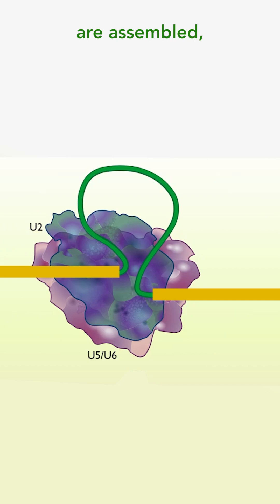Once the spliceosomes are assembled, it brings the exons on either side of the intron very close together, ready to be cut. The spliceosome first cuts the 5' end of the intron and loops it back on itself to join at a sequence of mRNA called a branch site. This forms the lariat loop.